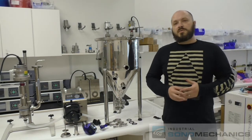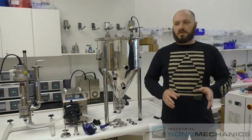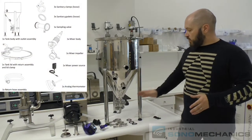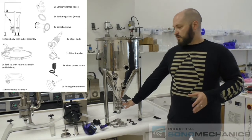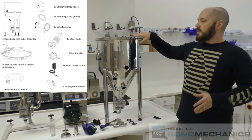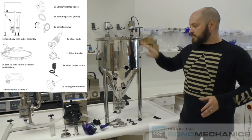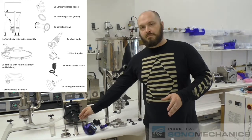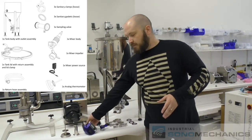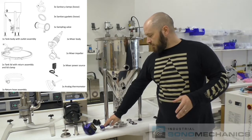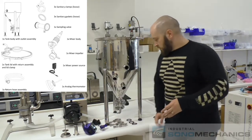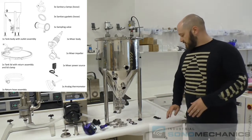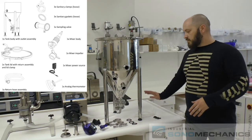First we're going to list the parts that you will find when you open the box. Remove all the parts from the box and you will have the tank body with the bottom valve already pre-assembled and you'll have the tank lid upside down for transportation. Other parts are analog thermometer, sampling valve, mixer body, mixer impeller, mixer power source, three sanitary clamps, three sanitary gaskets, three clips and the return hose.